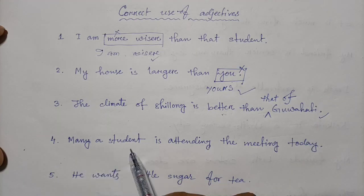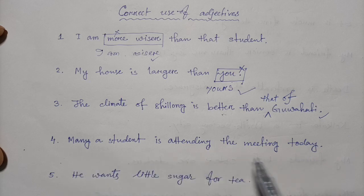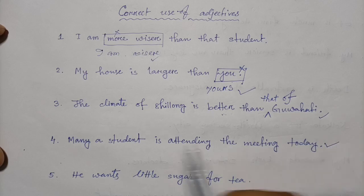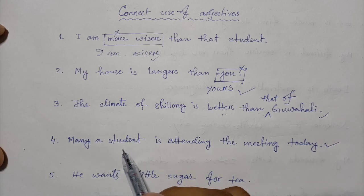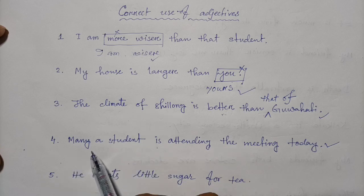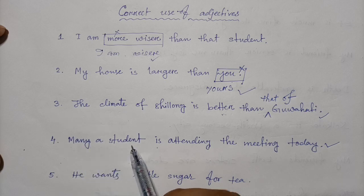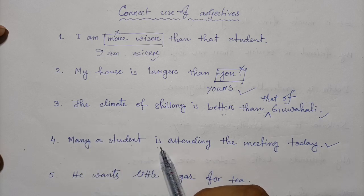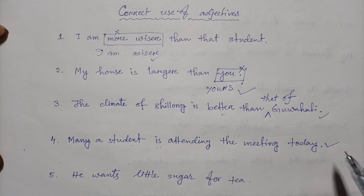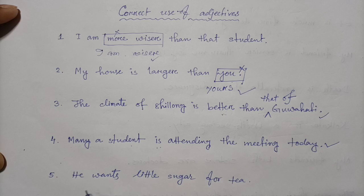Question number four: 'Many students are attending the meeting today.' With 'many a student,' the noun is singular and takes a singular verb. 'Many a student' is a singular noun, so this is the right sentence. There is no error in this sentence.